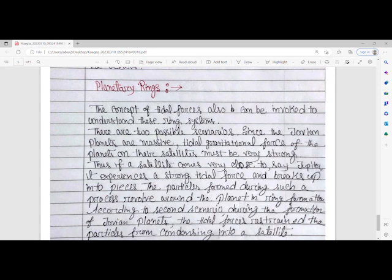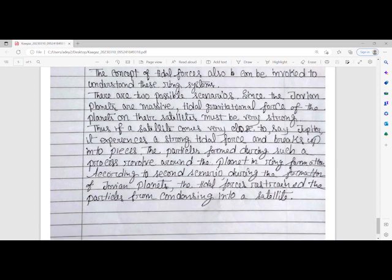Since the Jovian planets are massive, tidal gravitational force on their satellites must be very strong. If a satellite comes very close to a Jovian planet like Jupiter, it experiences very strong tidal force and breaks up into pieces. The particles formed during this process revolve around the planet in ring formation. According to the second scenario, during formation of Jovian planets, tidal forces restrain particles from condensing into satellites, which later accumulates around the planet and creates the ring system.